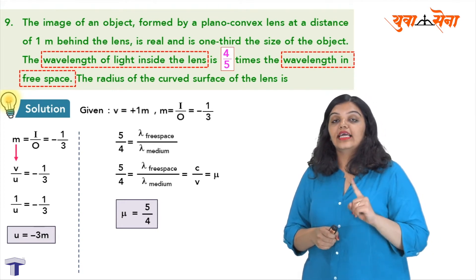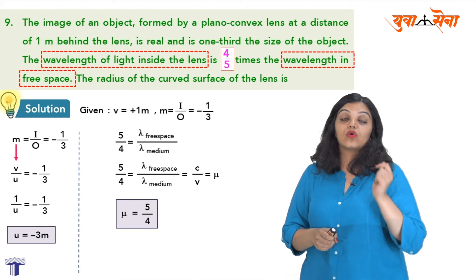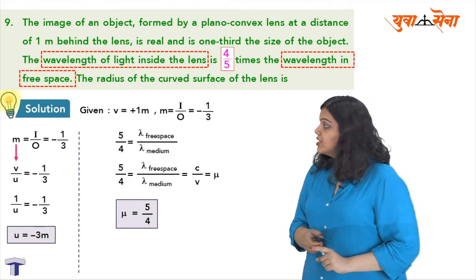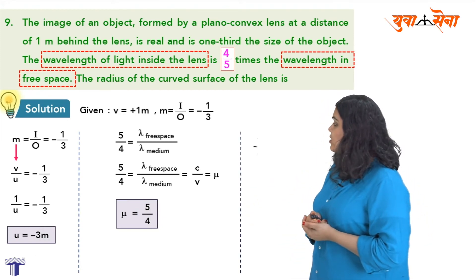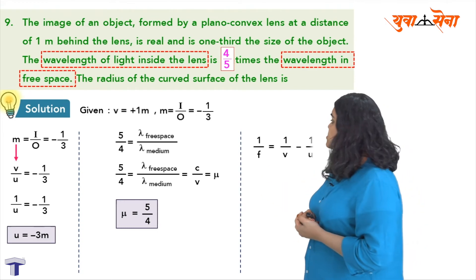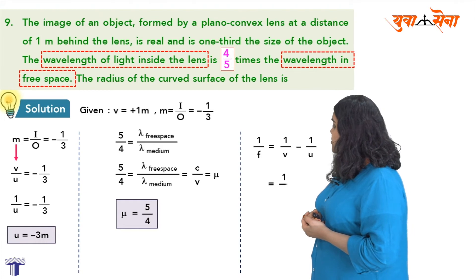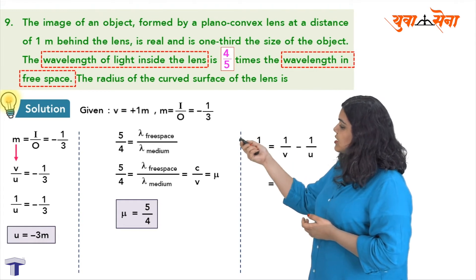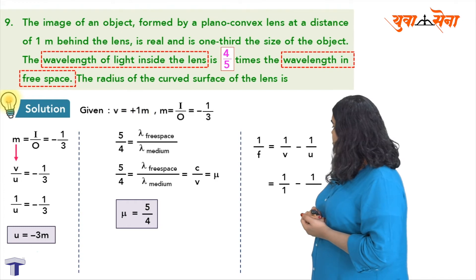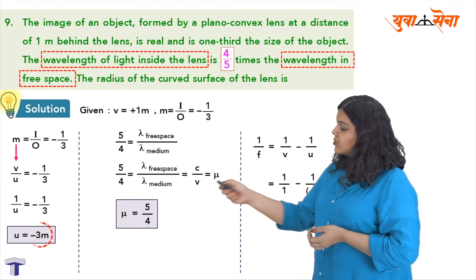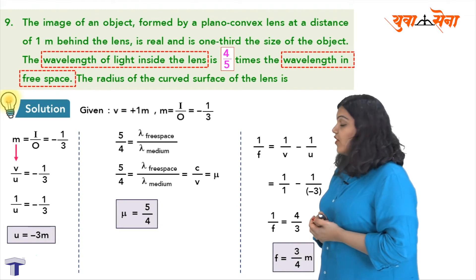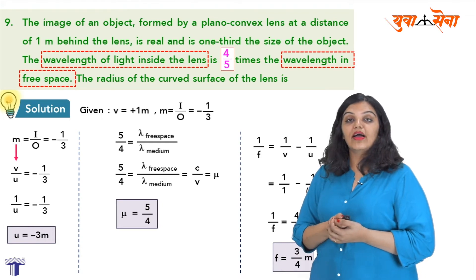Now I need the focal length to use the Lensmaker's formula. Using the lens equation: 1 upon f equals 1 upon v minus 1 upon u. With v equal to plus 1 meter and u equal to minus 3 meter, I calculate f equal to 3 by 4 meter.